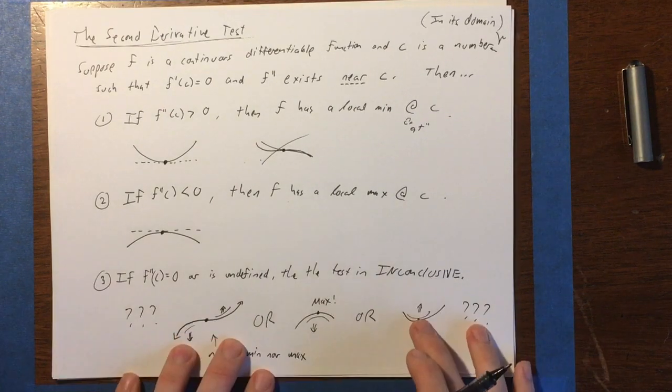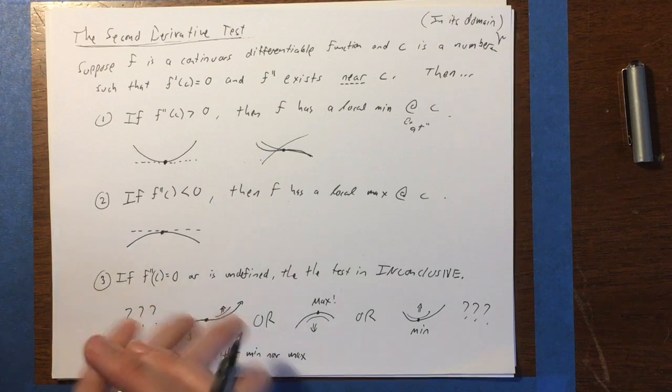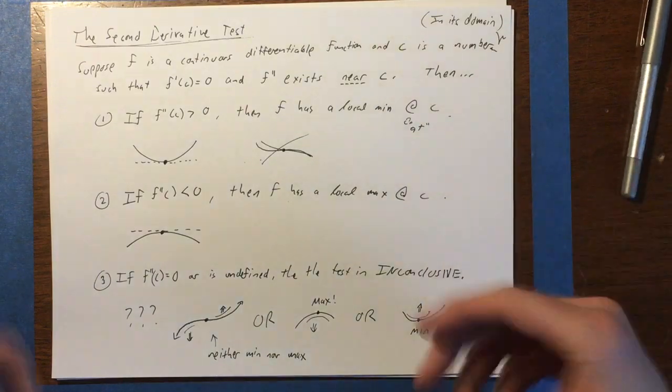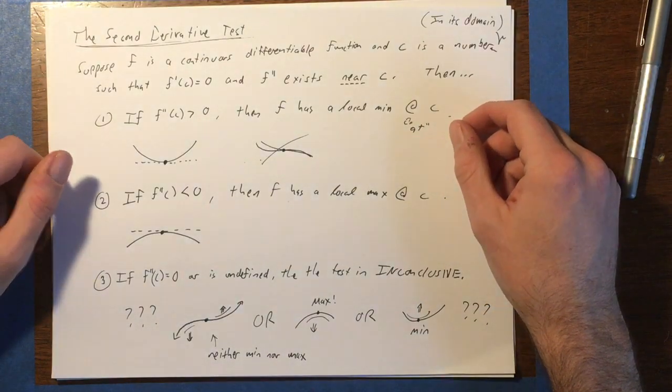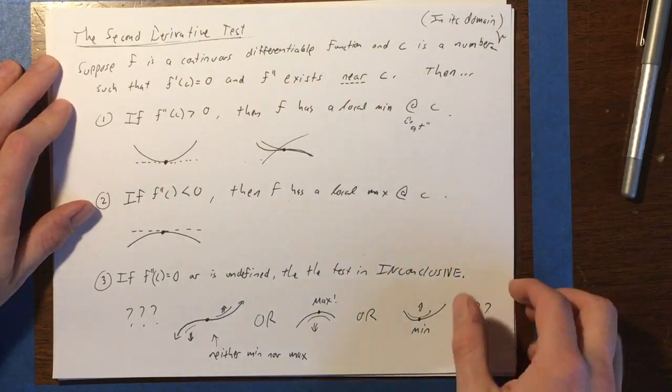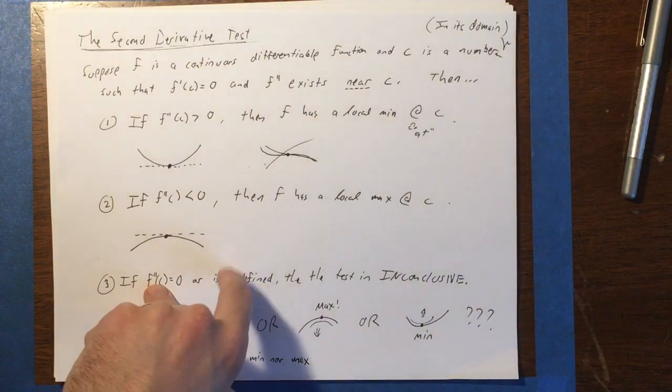And so what you have to do instead is just go back to the first derivative test and use that. Or use some other means, like look at a graph and just figure it out. But that's not very analytical, that's more a graphical approach. So that's kind of inferior in some other ways. Anyway, this is the second derivative test. So let's turn our attention to an example and see how it works.